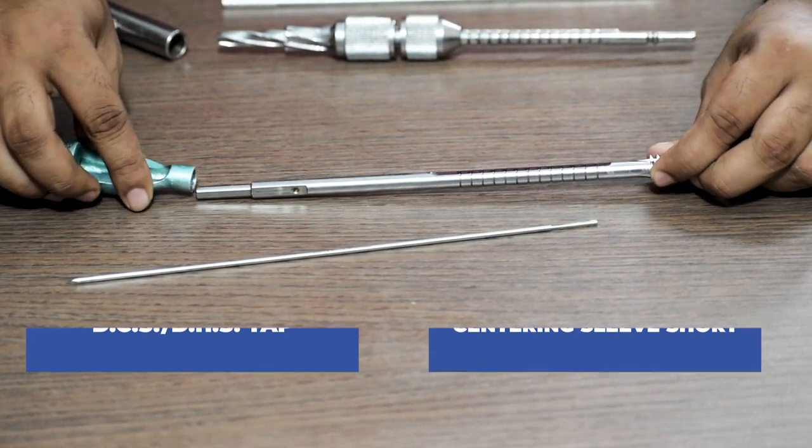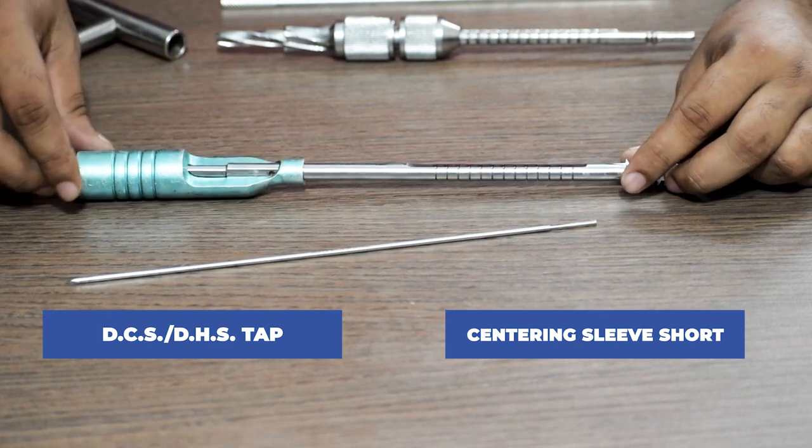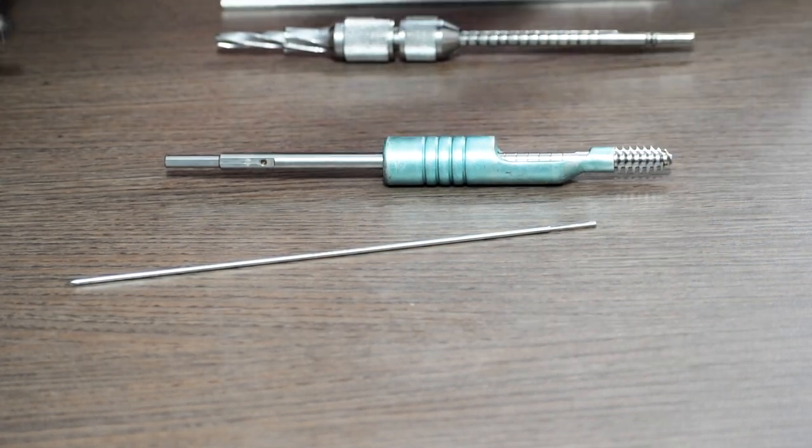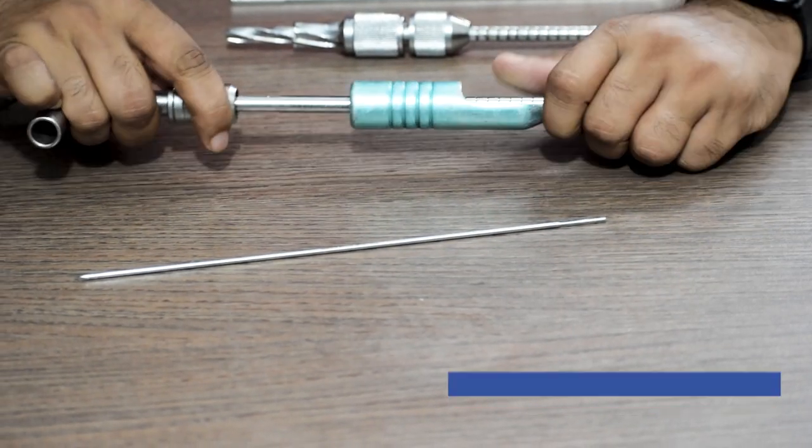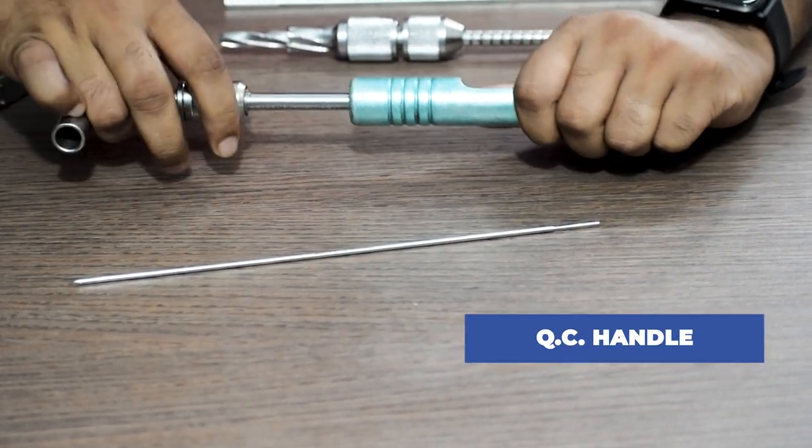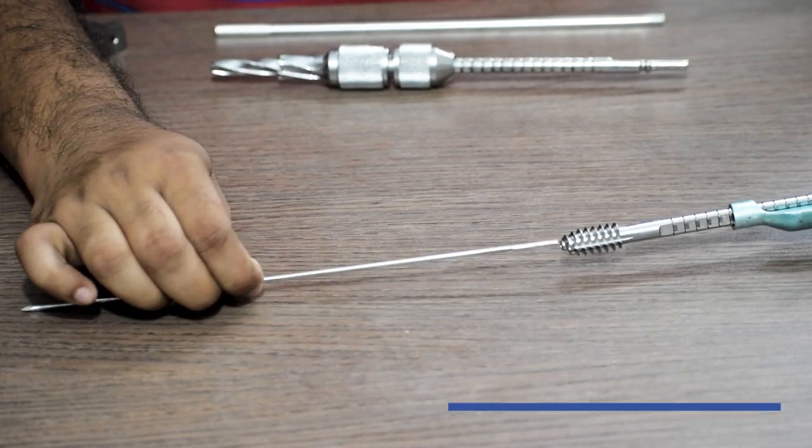Then we use a DCS DHS tap with the short centering sleeve attached to it. Then attach the QC handle at the end of this tap and use it to tap.